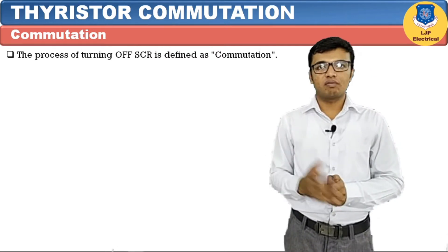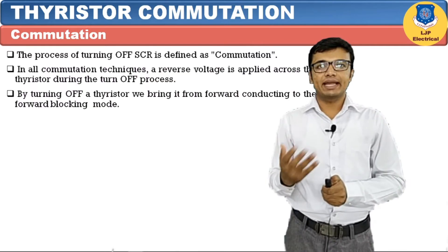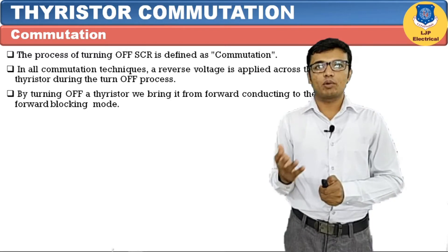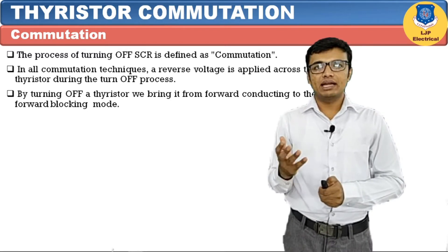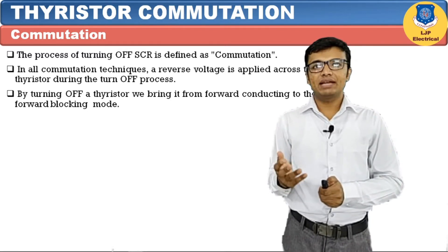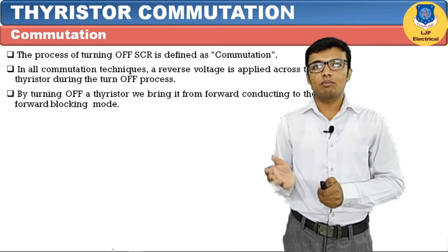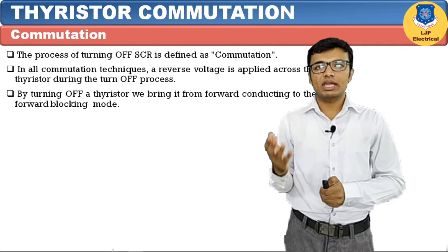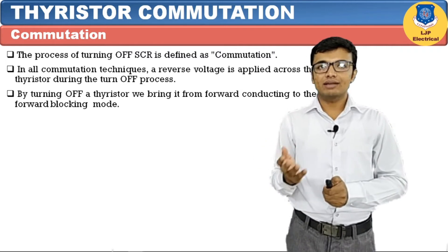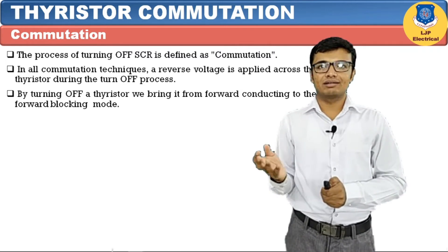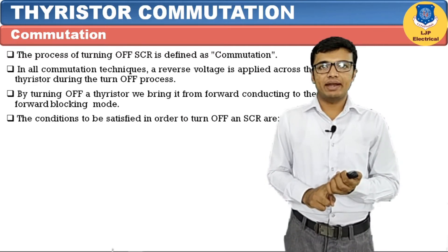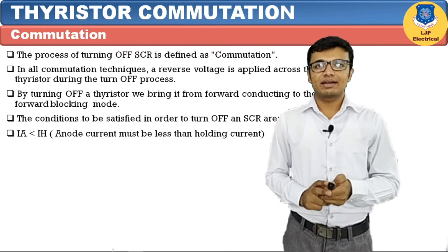Commutation is a process by which we can turn off the SCR manually or forcefully. In all commutation techniques, a reverse voltage is applied across the thyristor during the turn-off process. By turning off the thyristor, we bring it from the forward conducting mode to the forward blocking mode. In forward conducting mode it can conduct current, but in forward blocking mode it can only pass leakage current.